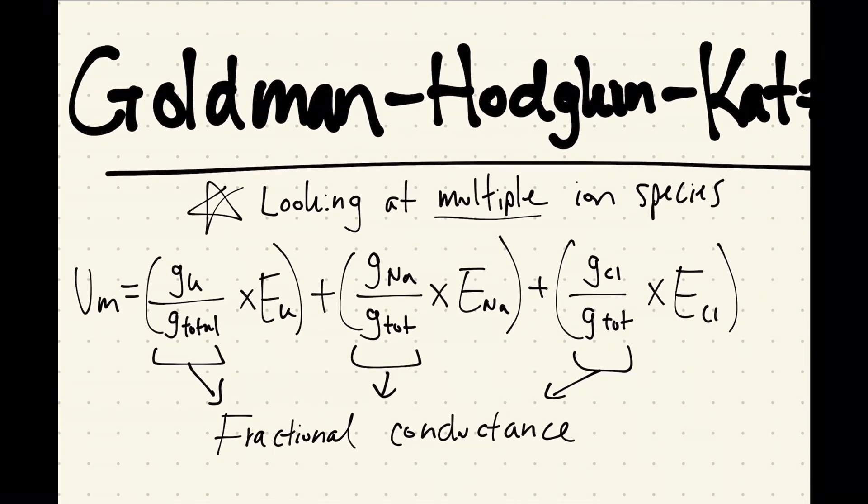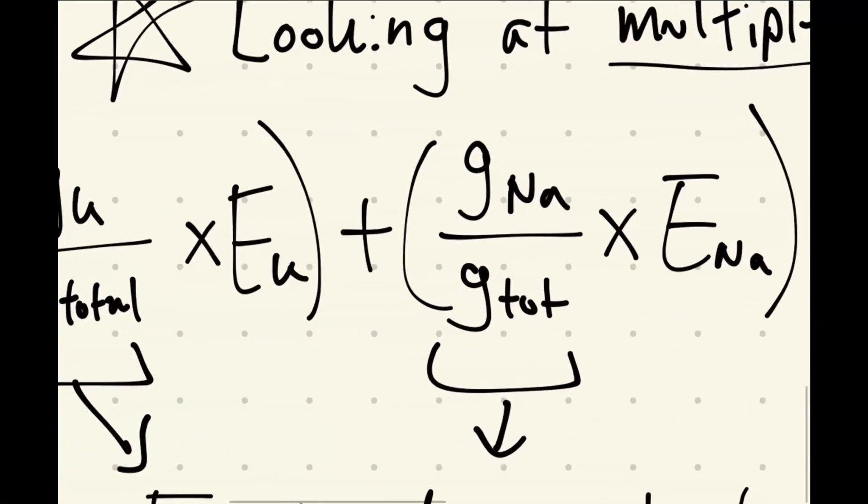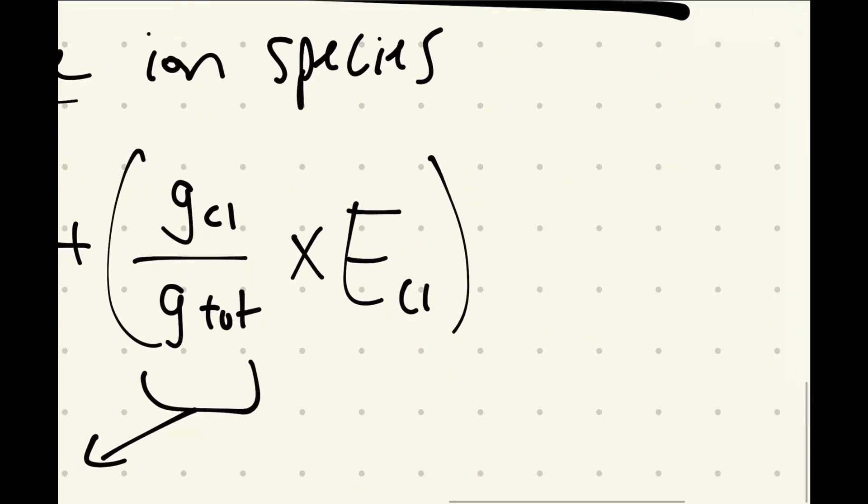So VM, which is the voltage of your membrane, is going to equal your fractional conductance of all your different ions. So the major ones in this equation and the major ones in physiological conditions is your potassium, your sodium, and your chlorine.